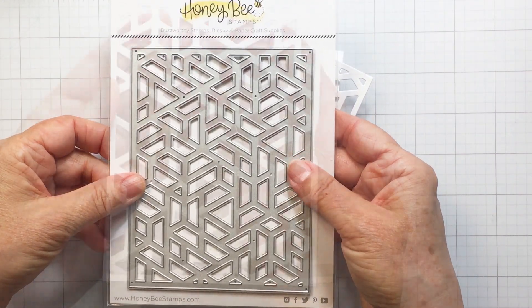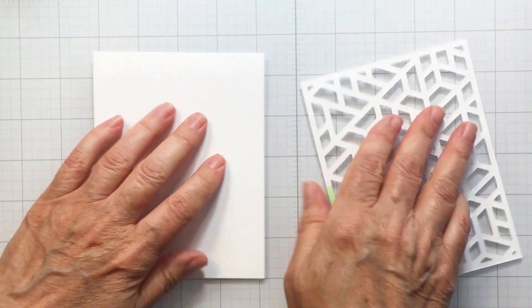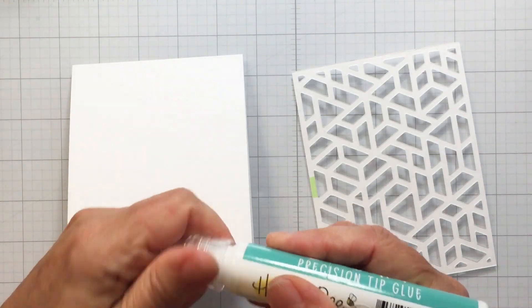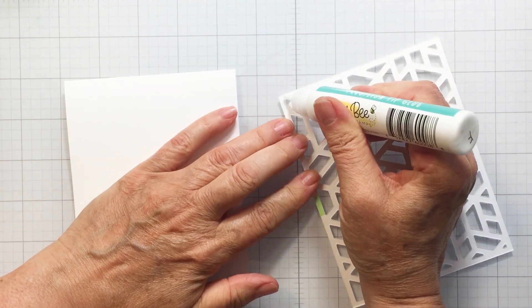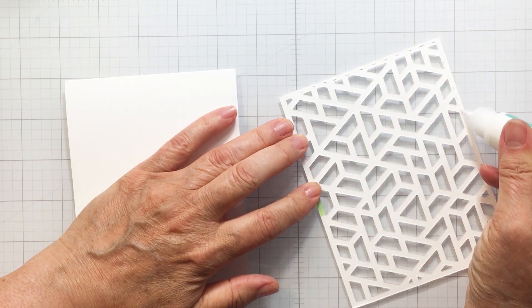I love the modern A2 cover plate from Honey Bee. Again, this is going to add some impact to my background by just creating some texture. I'm going to go ahead and use my Honey Bee precision glue tube here to just add some adhesive around the outside edges of this die cut piece.